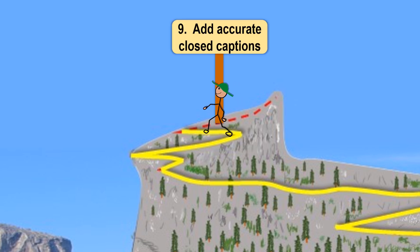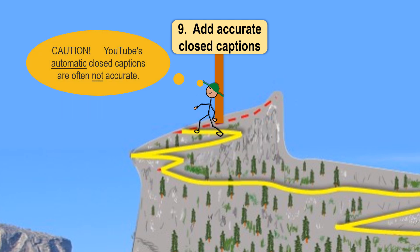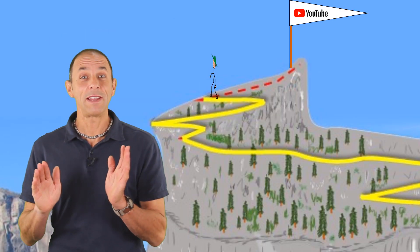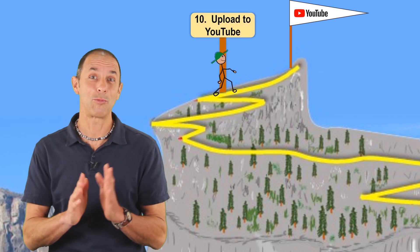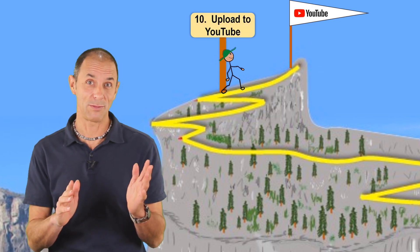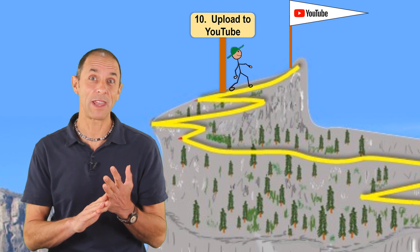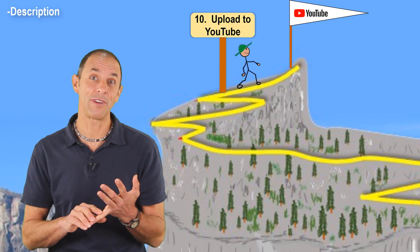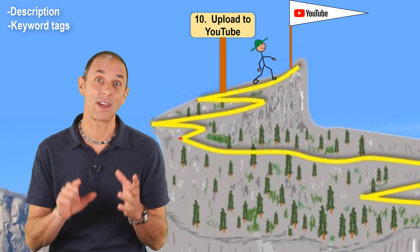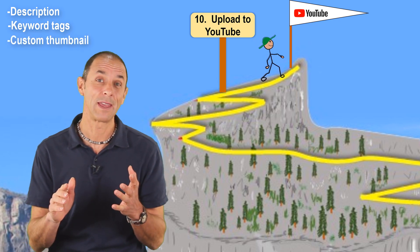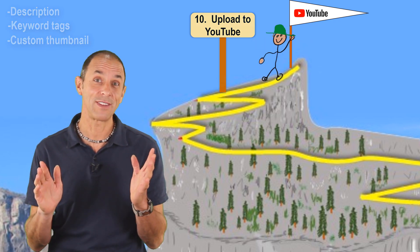Then I move on to the next step, where I create the accurate closed captions file so that the video will be accessible to people who are hard of hearing or deaf. And then I finally come around that last turn in my journey up the mountain, where I'm ready to upload my video to YouTube. As I do this, I make sure I've got a good description for the video, keywords so it can easily be searched for, and a nice thumbnail that goes with it. And I'm ready to share my science with the world.